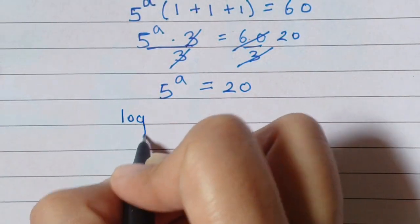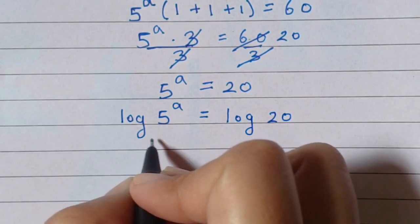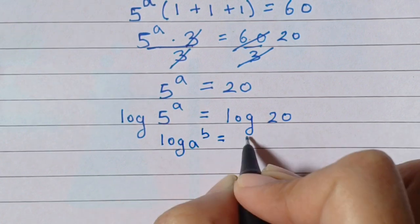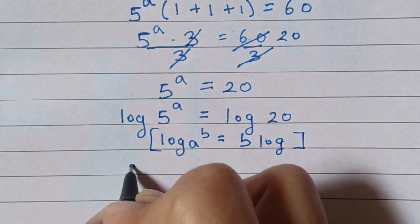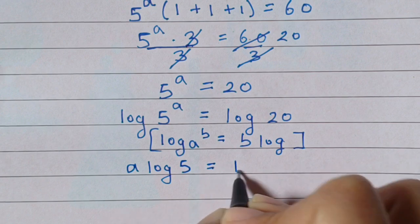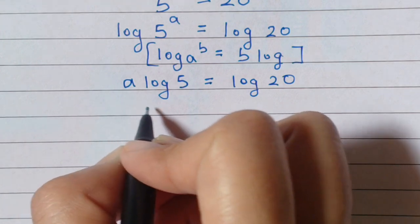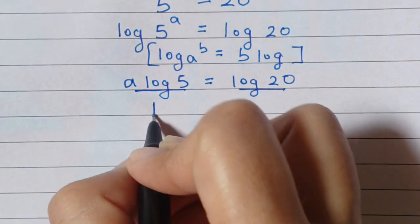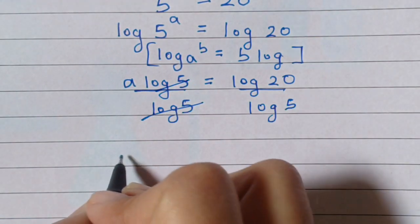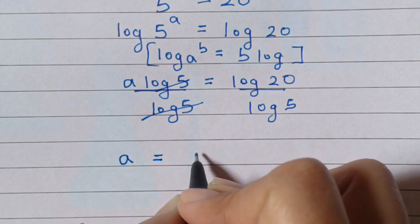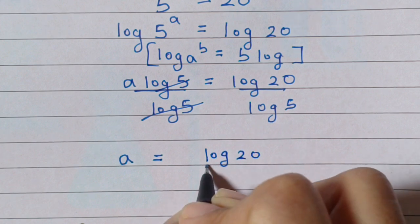Take log on both sides. We know that log of a to the power b is equal to b log a — apply this formula here. So we get a log 5 is equal to log 20. Then divide by log 5 on both sides, and this log 5 will get cancelled. Here we get a is equal to log 20 divided by log 5.